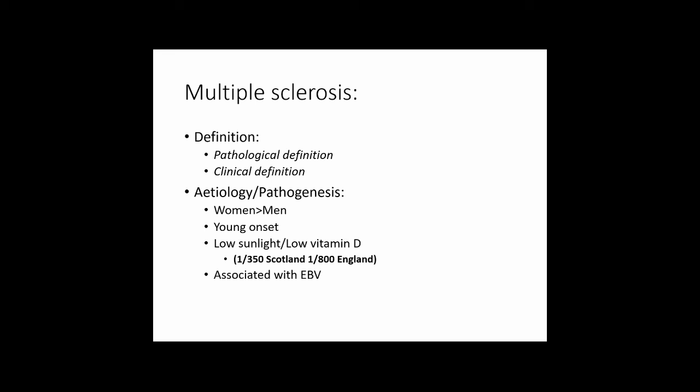MS is associated with low levels of sunlight from birth. A person born near the equator who moves to an area with low sunlight retains the risk of those at the equator; however, their children born in the new country adopt that country's higher MS risk, associated with low vitamin D from reduced sunlight. The rate of MS is higher in the northern hemisphere — in England it's about 1 in 800, in Scotland about 1 in 350 — and it's also associated with Epstein-Barr virus infection.